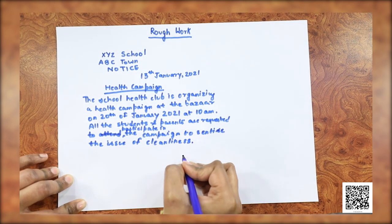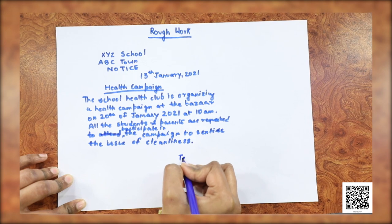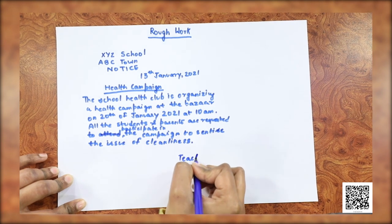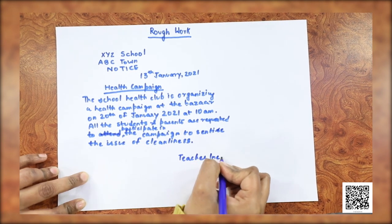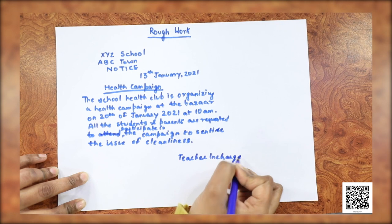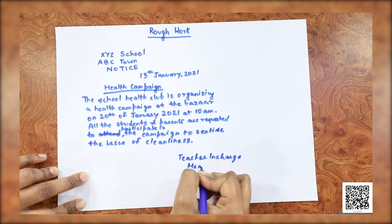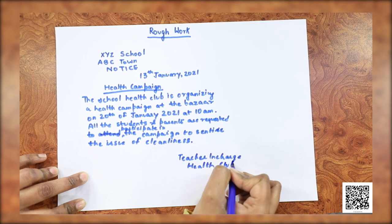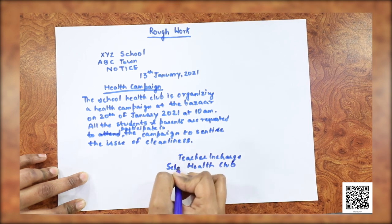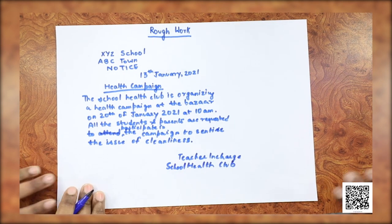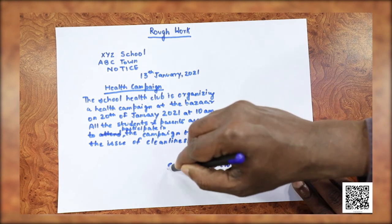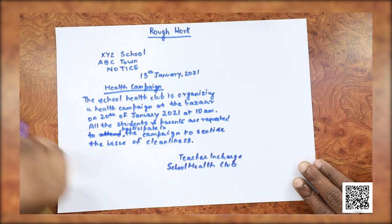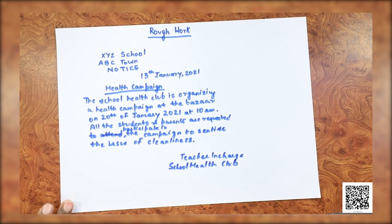At the end, we write 'Teacher in Charge' since the name is not given — it is assumed the teacher in charge has signed. Then we write 'Health Club.' Since the school name is already written at the top, you need not write 'School Health Club' again. Repetition is not allowed — language does not allow unnecessary repetition. We call it redundancy.